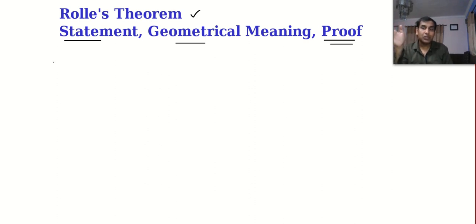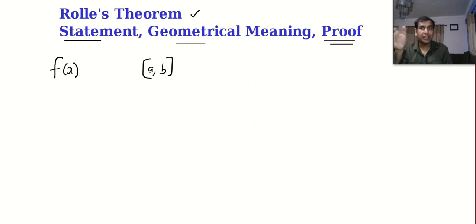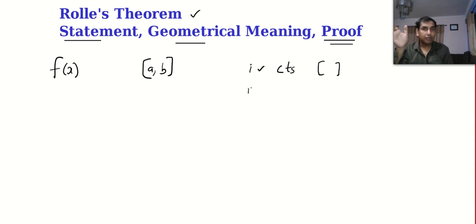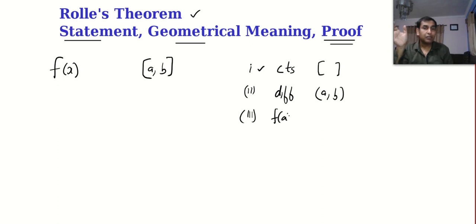The statement goes like this: suppose f of x is a function defined in the closed interval a comma b. A closed interval means a and b are included, and all the numbers between a and b are also included. There are three conditions: the function should be continuous in the closed interval, the function should be differentiable in the open interval, and the height of the function at a and the height of the function at b should be the same.